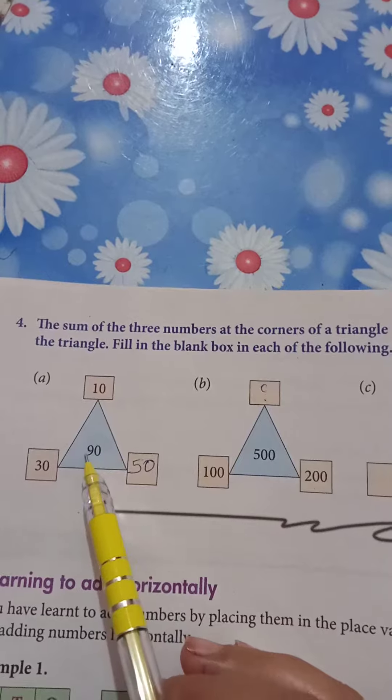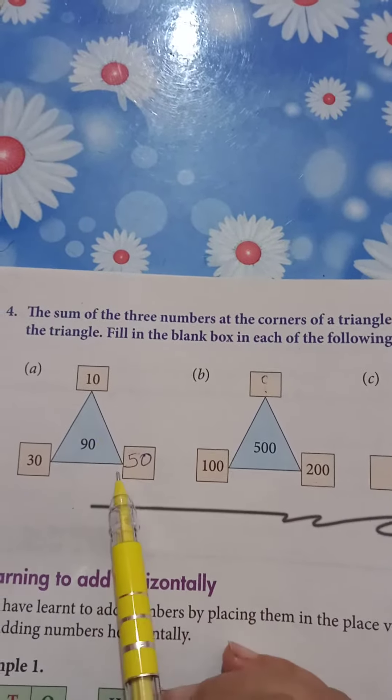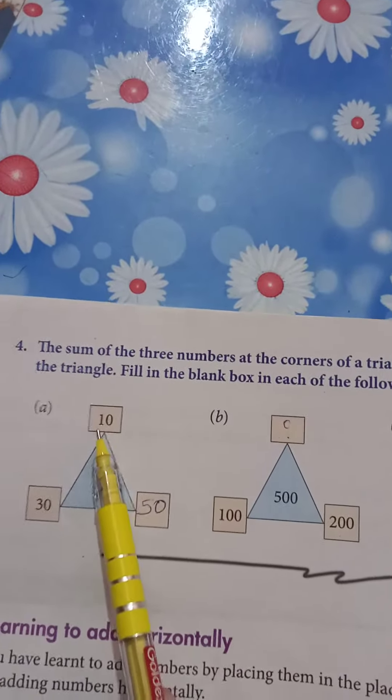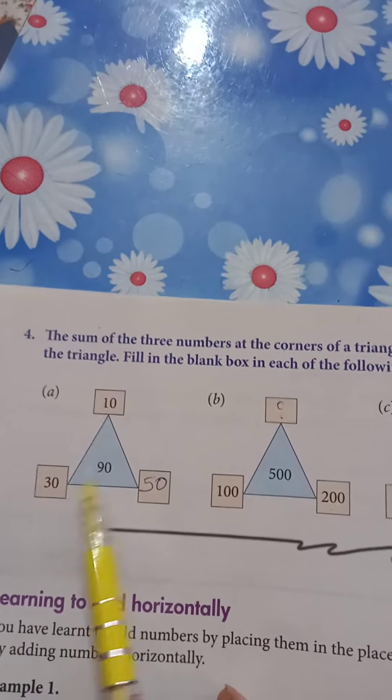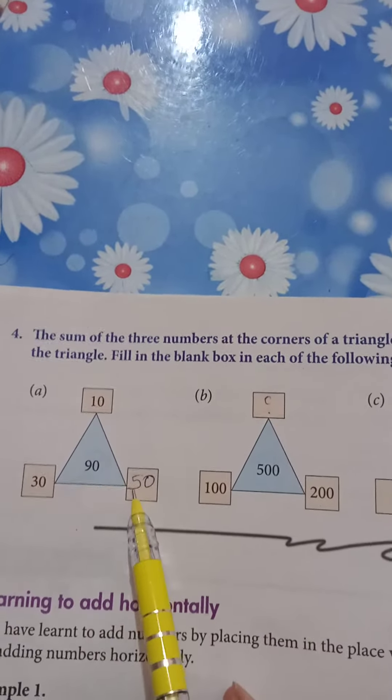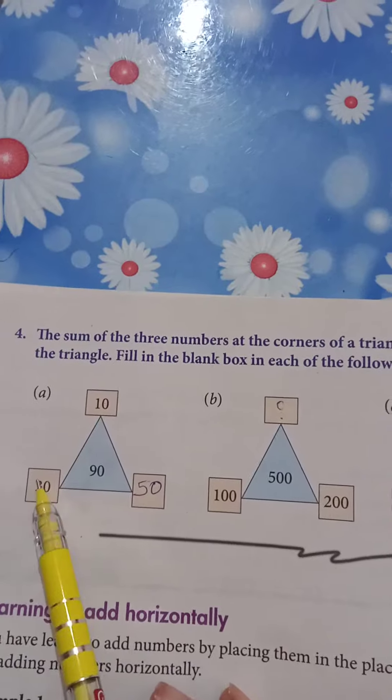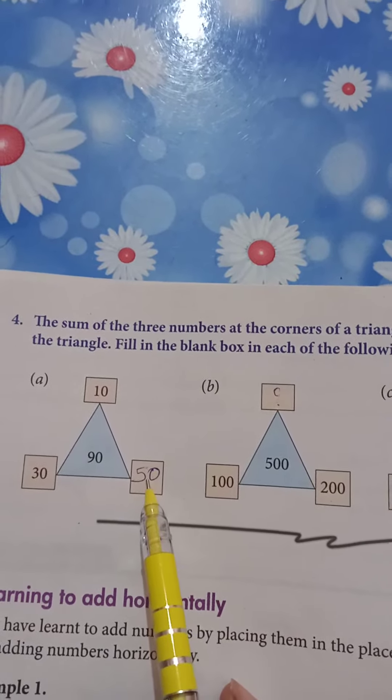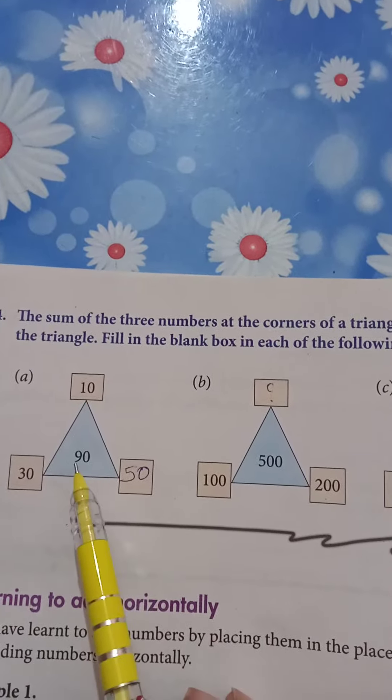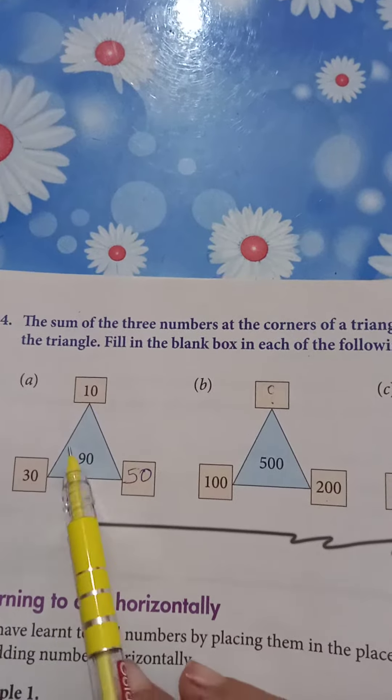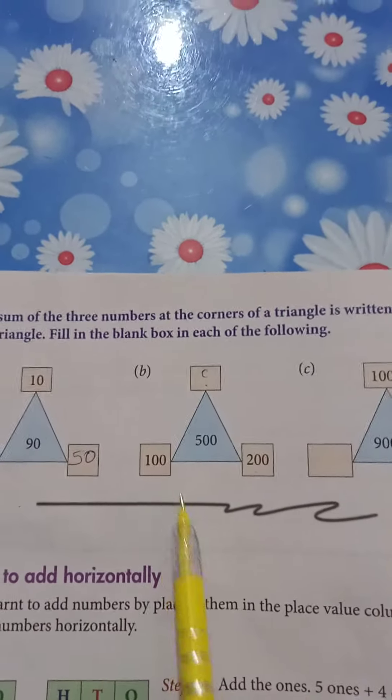So here what is written? This is 90, this is the sum of three numbers in which one number is 10 and the second one is 30. And you have to write the next, and I have written here first 50. So 30 plus 50 makes 80, plus 10 is equal to 90. Like that you have to complete all the triangles.